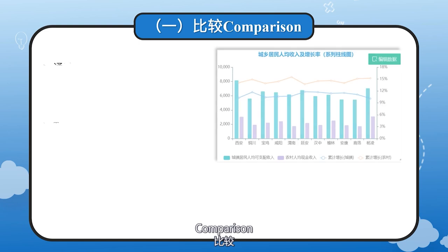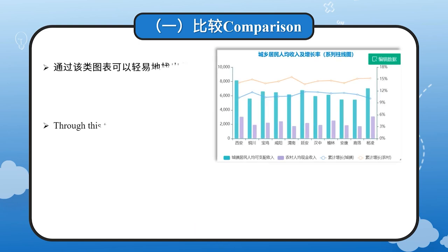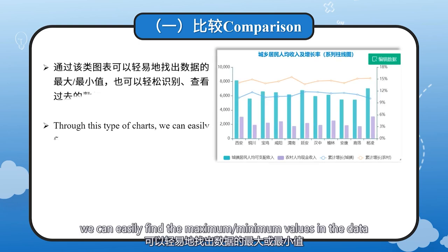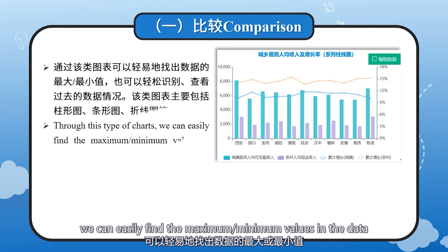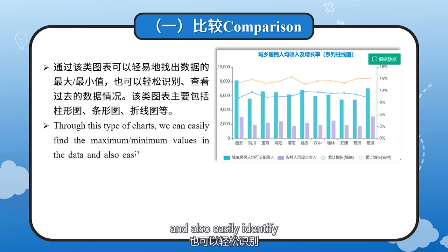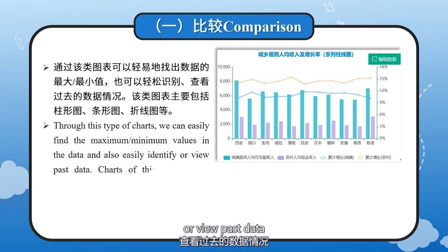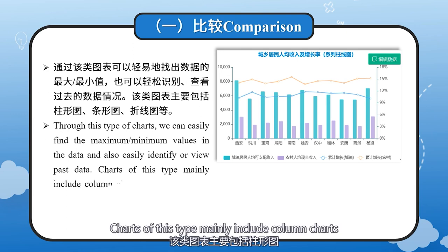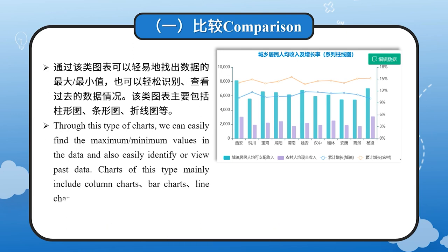Comparison: Through this type of charts, we can easily find the maximum and minimum values in the data, and also easily identify or view partial data. Charts of this type may include column charts, bar charts, line charts, etc.